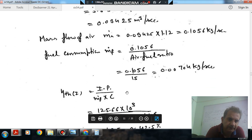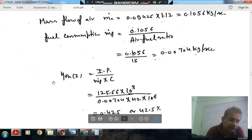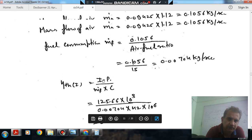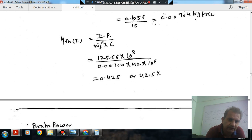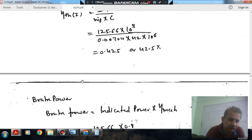This will be fuel consumption and thermal efficiency, indicated thermal efficiency, is indicated power by mass of fuel times calorific value. Indicated power we have calculated is 125.60, that is 125.66 kW. We have taken all the factors into account, so that is 0.425 or about 42.5 percent efficiency.